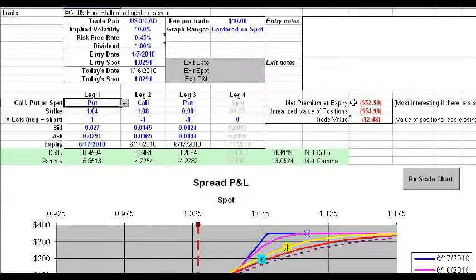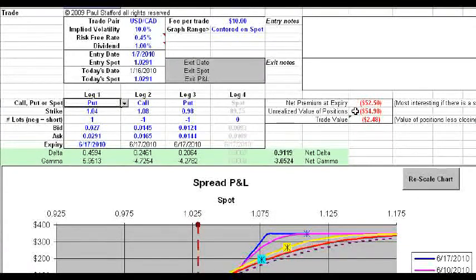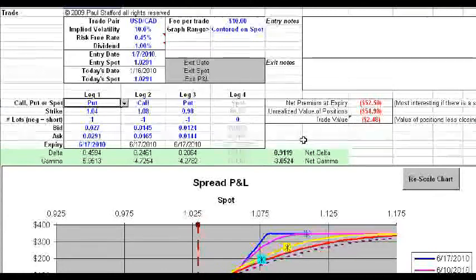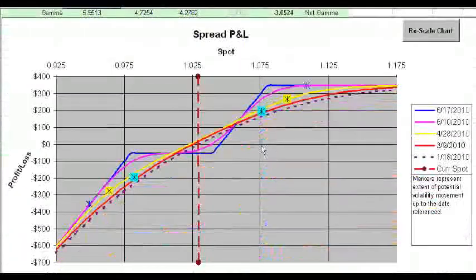This next area here represents a calculation of the net premium at expiry, the value of the positions, and the trade value. Then we come down to this area here, which is calculating a few of the Greeks for the particular trade that you've got on, for each individual one, and then for the net.